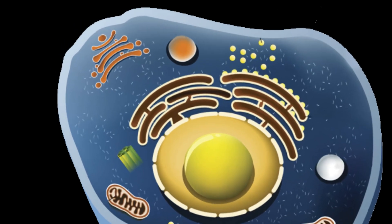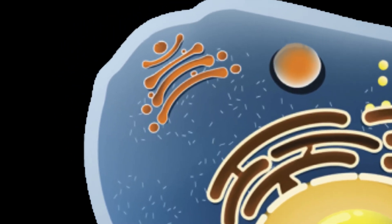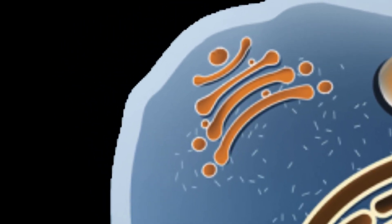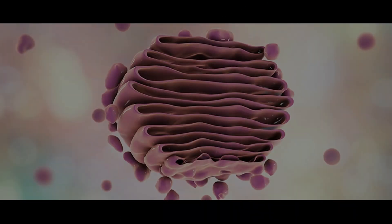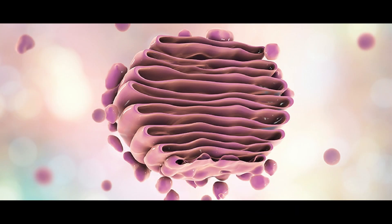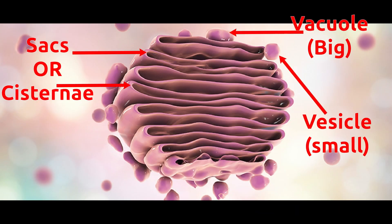Golgi bodies are disc-shaped groups of flattened sacs or cisternae. Golgi bodies also include small vesicles and large vacuoles. Vesicles are used to pack cell material for transfer, and vacuoles are nutrient and water storage units.